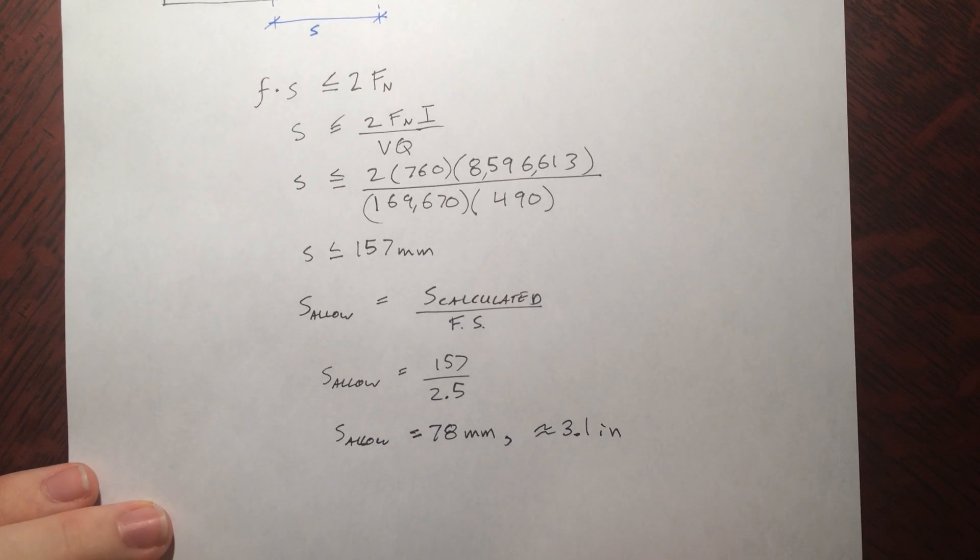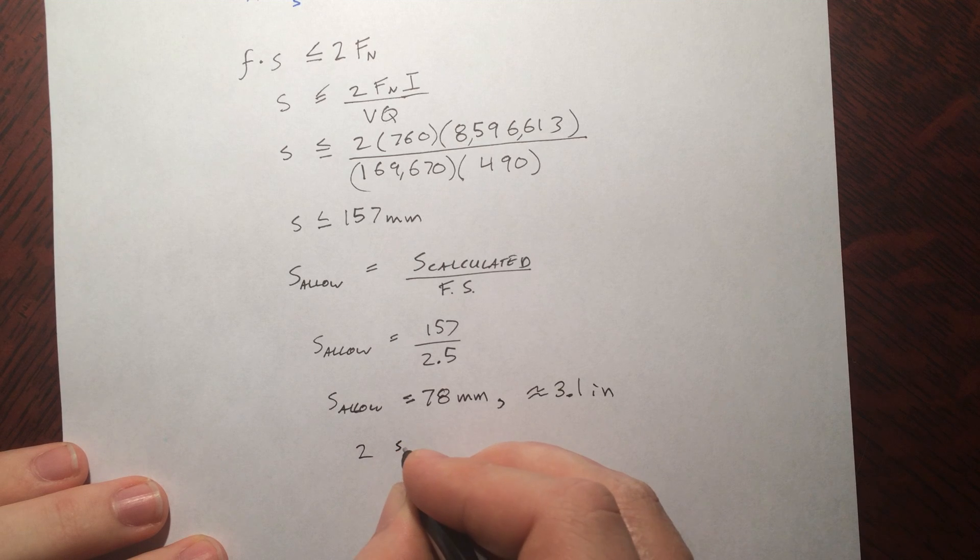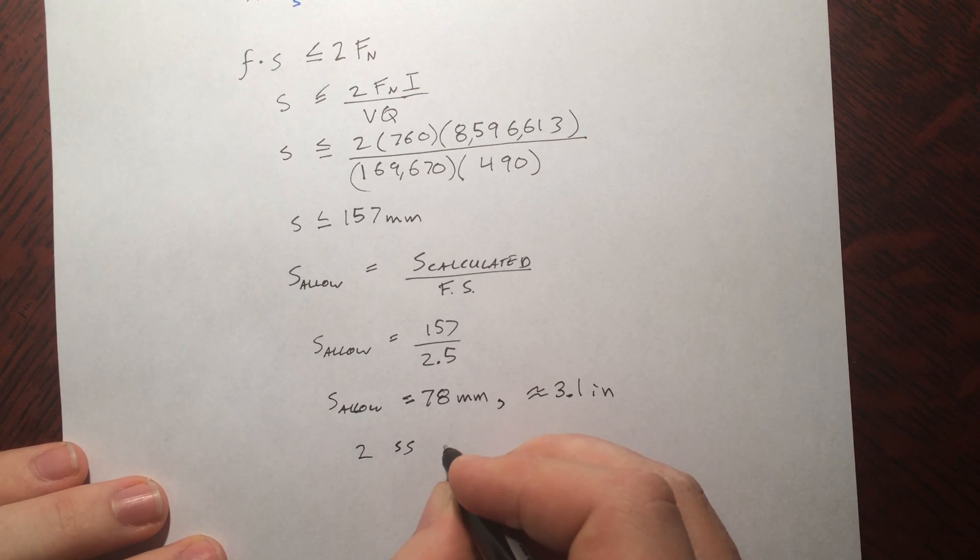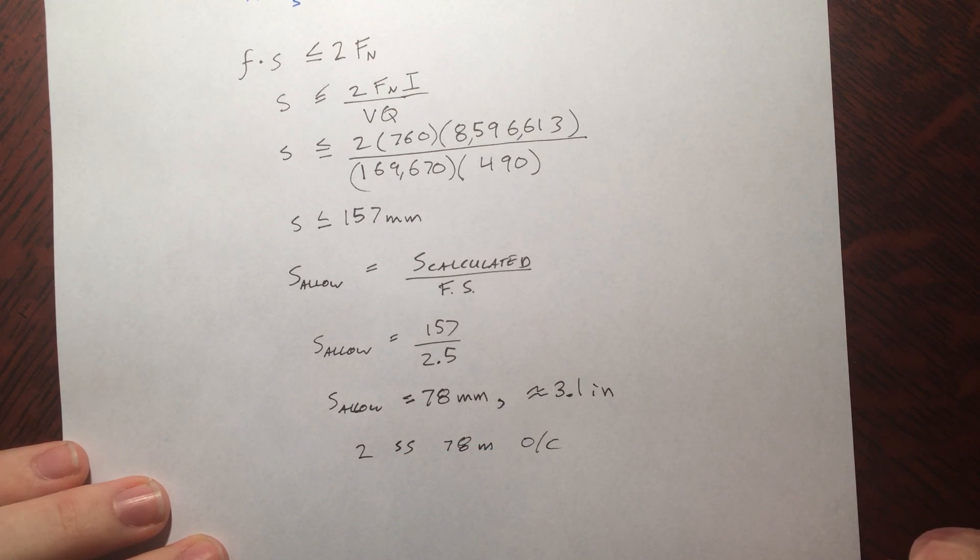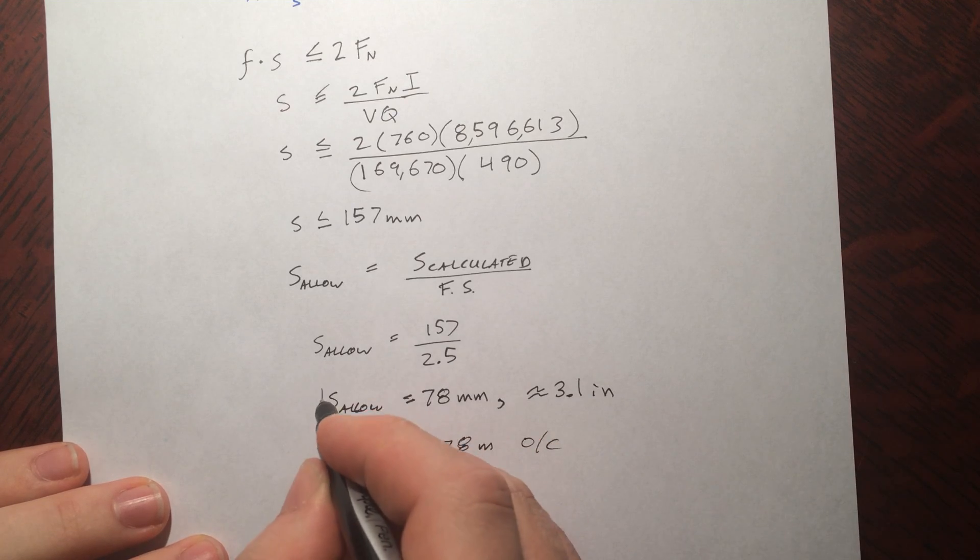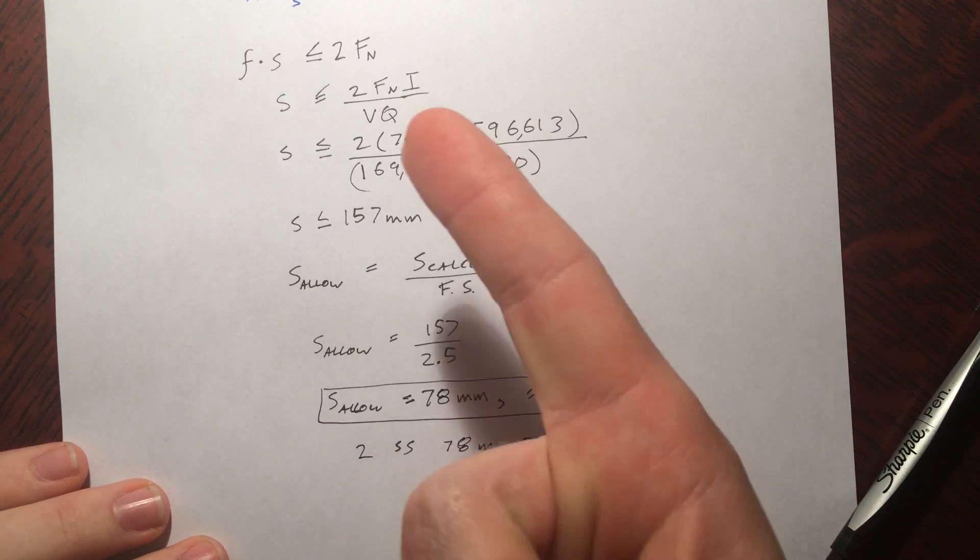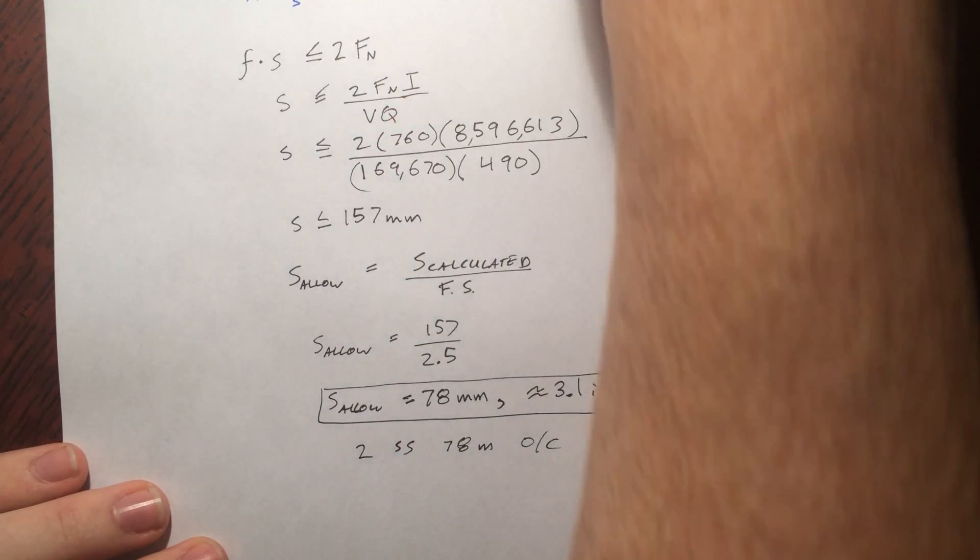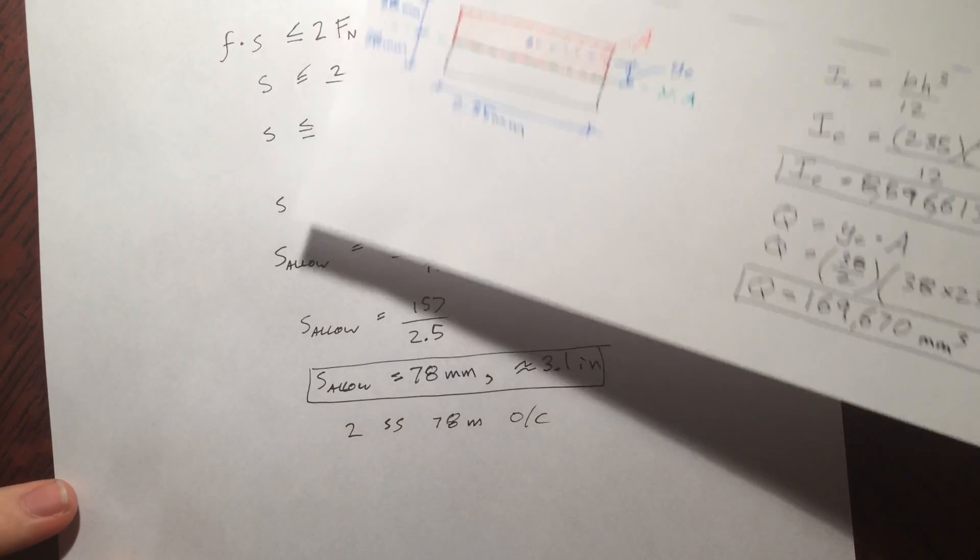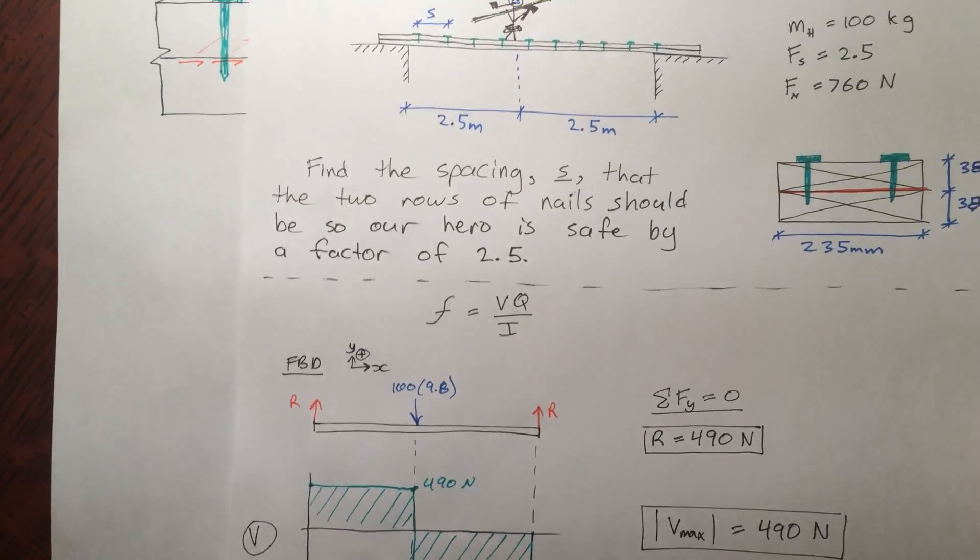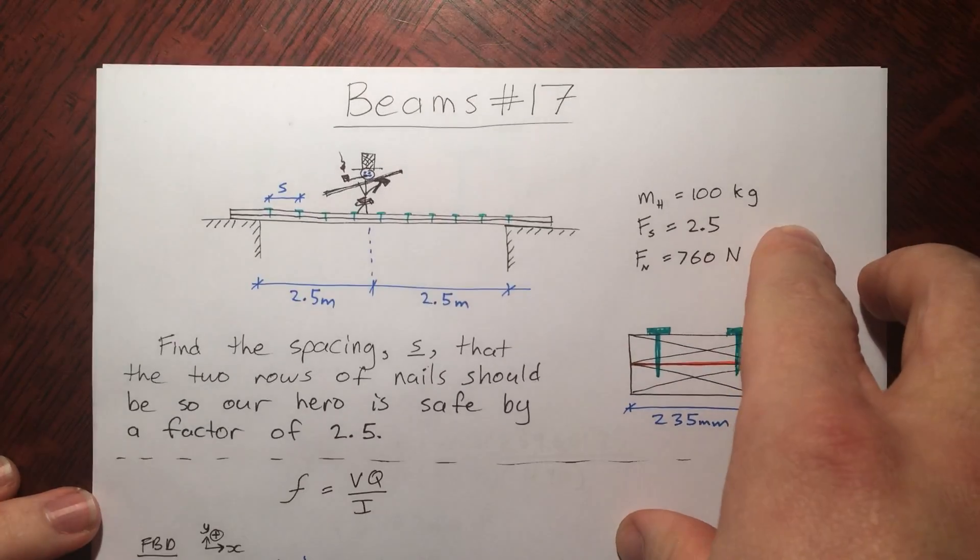So on a drawing you would say, 2 smooth shank nails, 78 millimeters on center, for safety. Something like that. That's a pretty reasonable answer. 3 inches, that's about the length of my finger. And it's actually quite a few nails, you probably, if you were construction working, you probably wouldn't put that many nails in it, it's just insane, because you'd have to go back later and pull them all out again when you needed that lumber back. Anyway, that's kind of a fun little question to do.